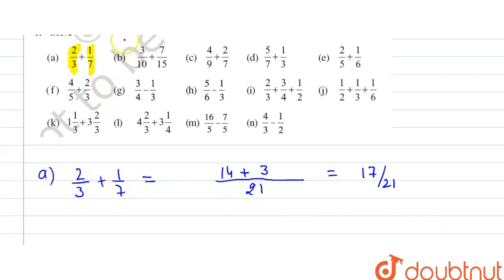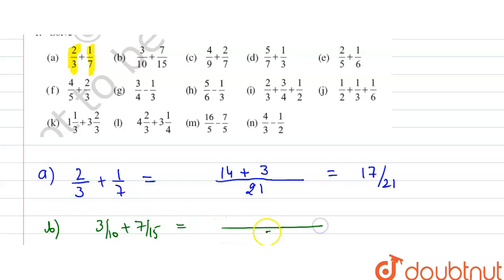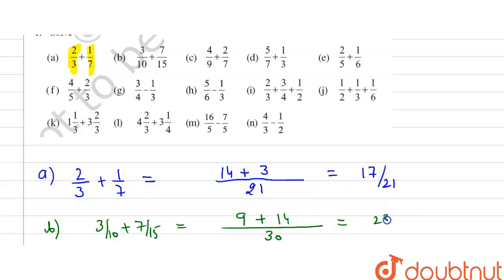The second part is 3/10 + 7/15. The LCM of 10 and 15 is 30. So 3 × 3 = 9, and 2 × 7 = 14. Adding gives 23/30.